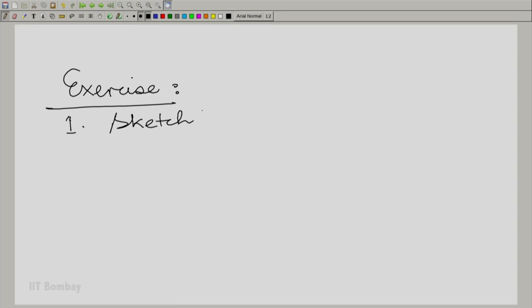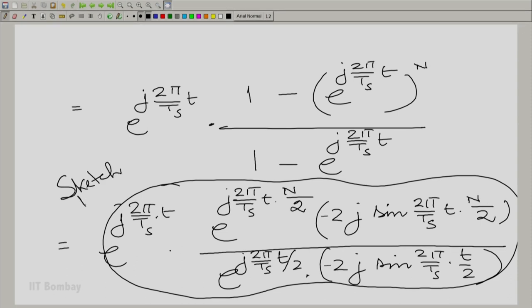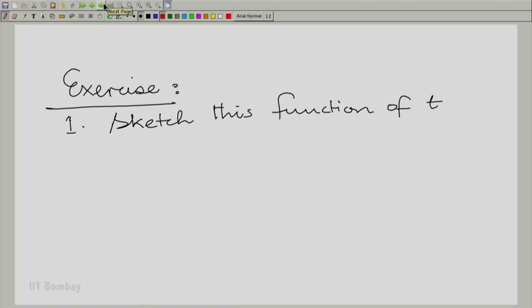Now, this is where I am going to leave some work for you to do. The first piece of work is sketch this function of t. Which function are we talking about? This function that we saw, this one. So, sketch this. This is the exercise. Now, you must remember that of course, 2j would get cancelled here. And you can look at this as a sin by sin form. You have dealt with that form before in module 2. So, you know how to handle it. You can also combine all of these terms to make it simple. That should make it relatively easy for you to deal with.